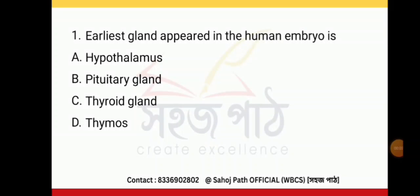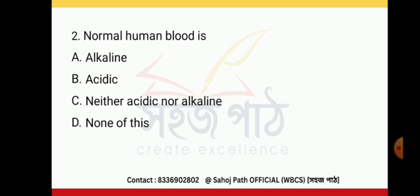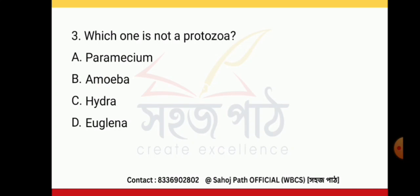The earliest gland to appear in the human embryo is the pituitary gland. Normal human blood is alkaline. Which one is not a protozoa? Hydra.